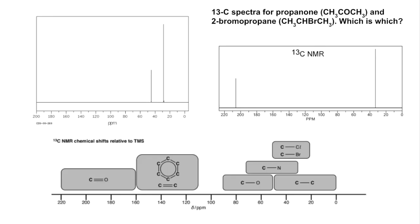Looking at some spectra now: one is for propanone (CH3COCH3) and the other is for 2-bromopropane. Both have two peaks, so both contain two carbon environments. In propanone the two CH3 carbons are equivalent and the central carbon is unique; similarly in 2-bromopropane the two CH3 carbons are equivalent and the CH carbon is unique.